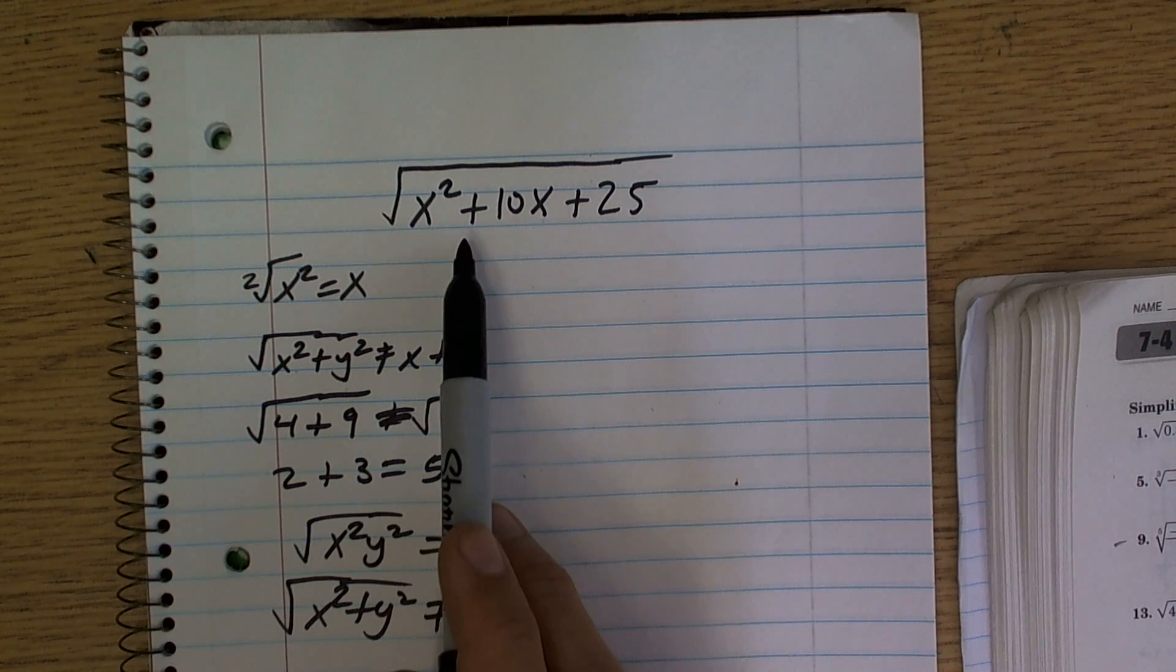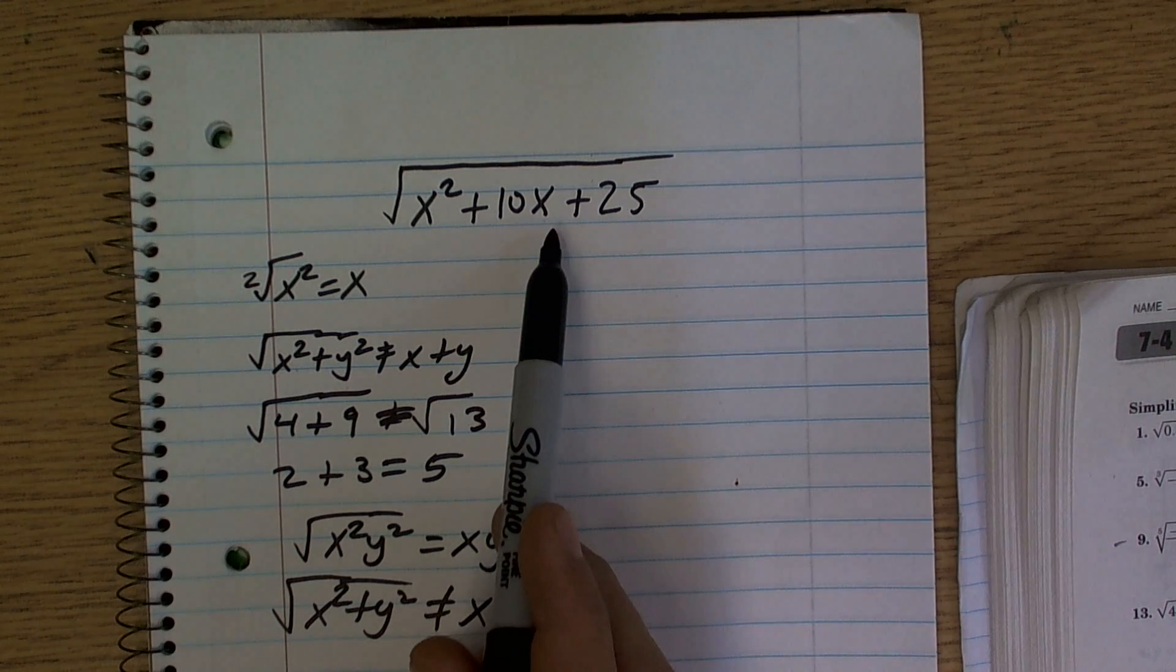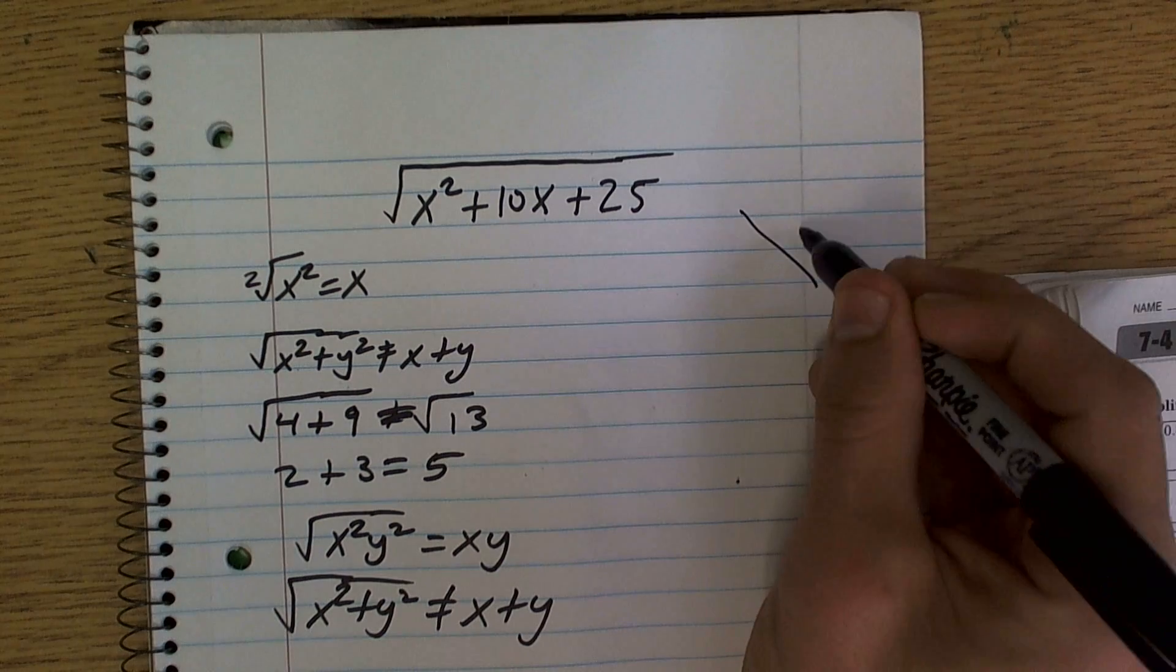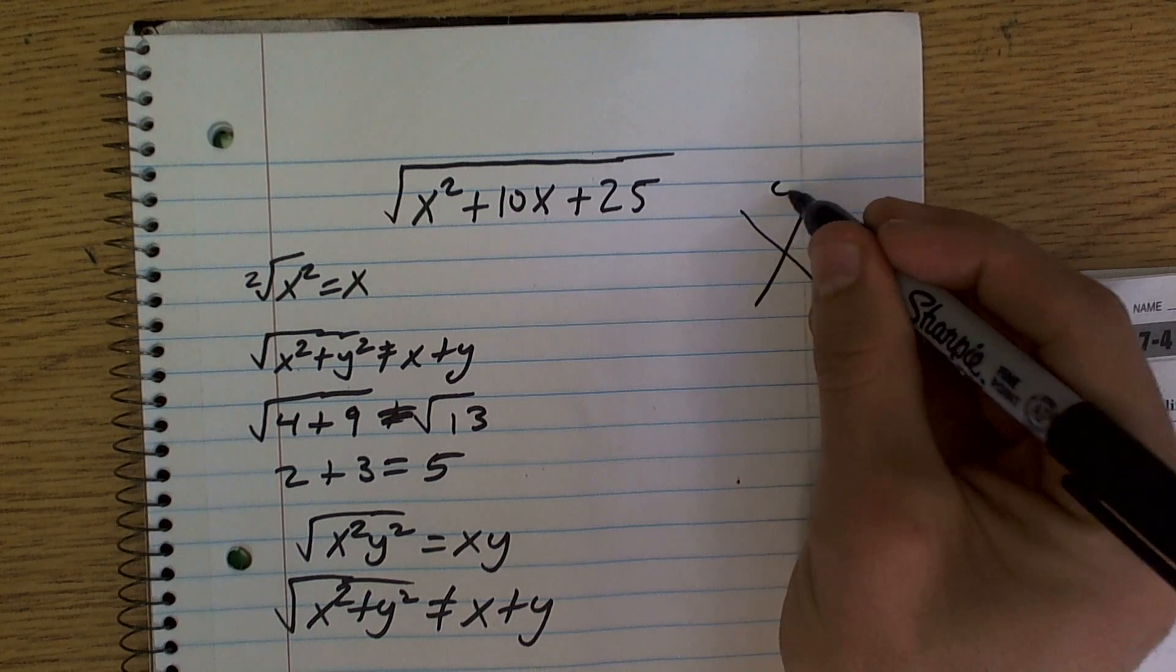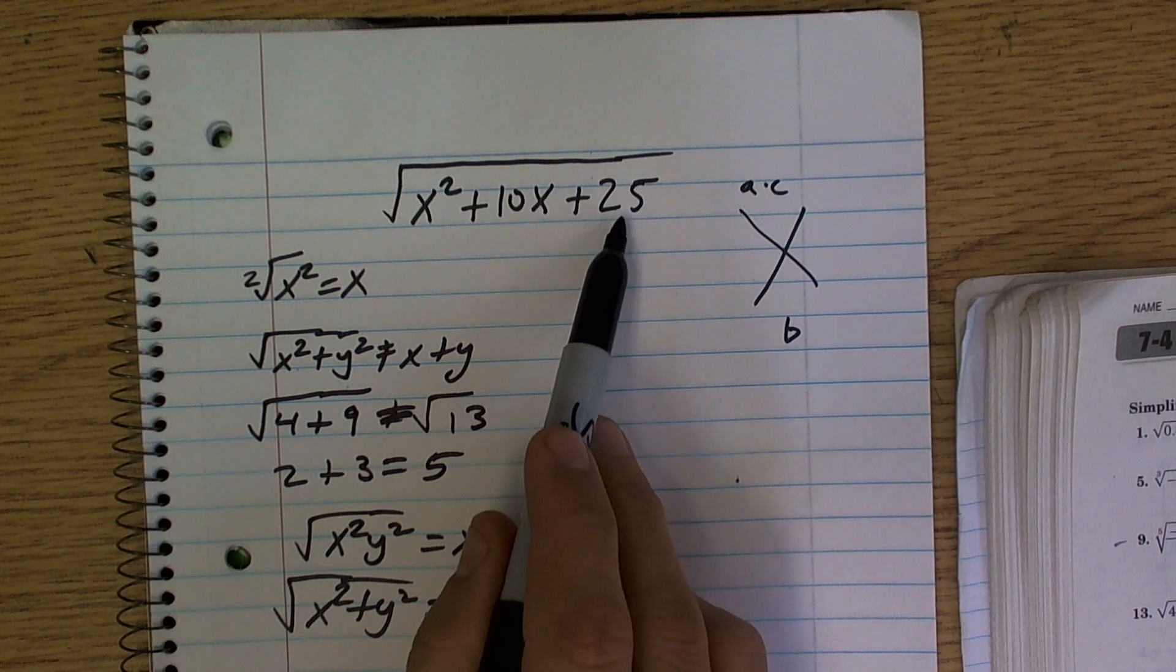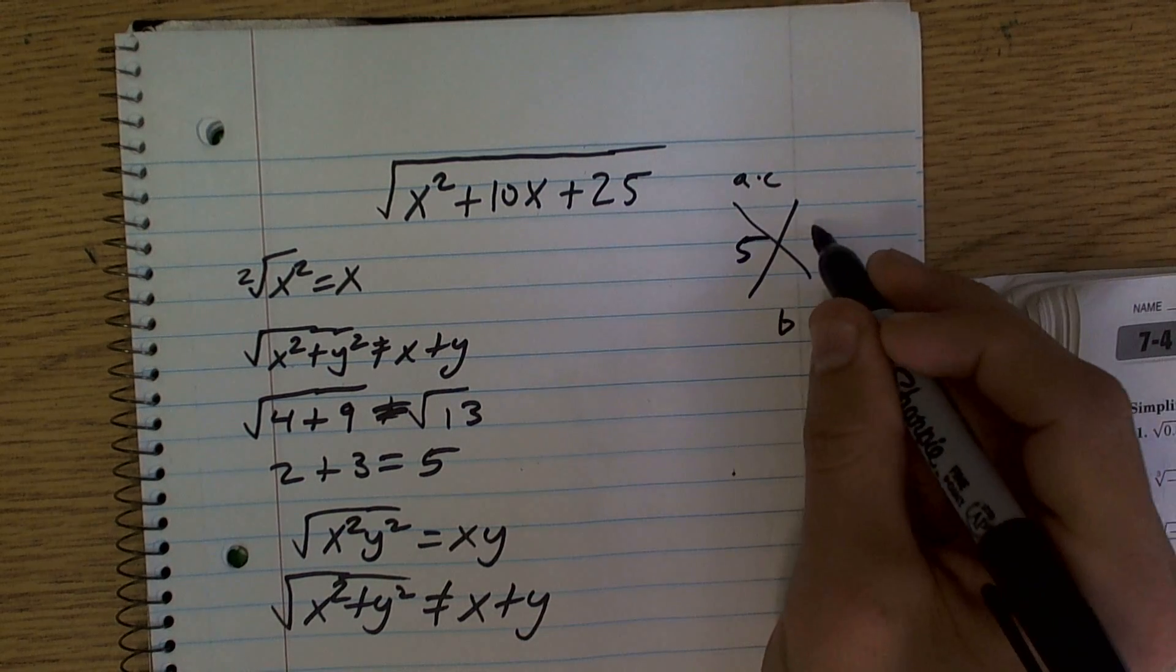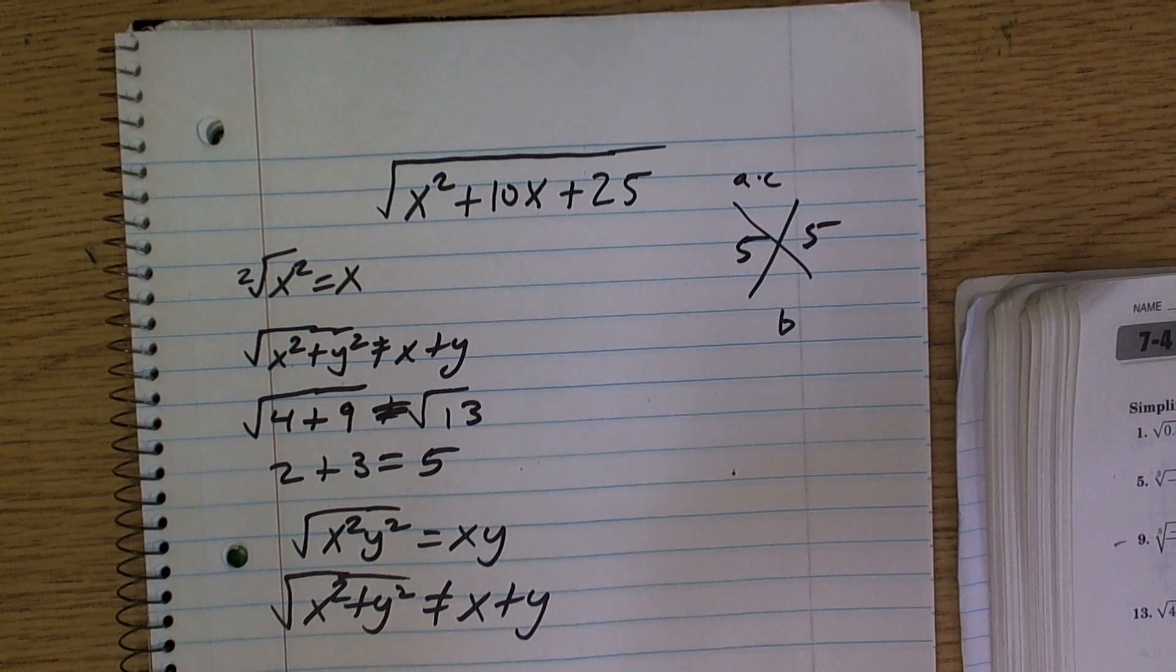And what happens is, if I was to reverse this and look into factoring this, you could have your a times your c and your b, and say what two numbers multiply to give me 25, but add to give me 5? 5 and 5. Positive 5 and positive 5.